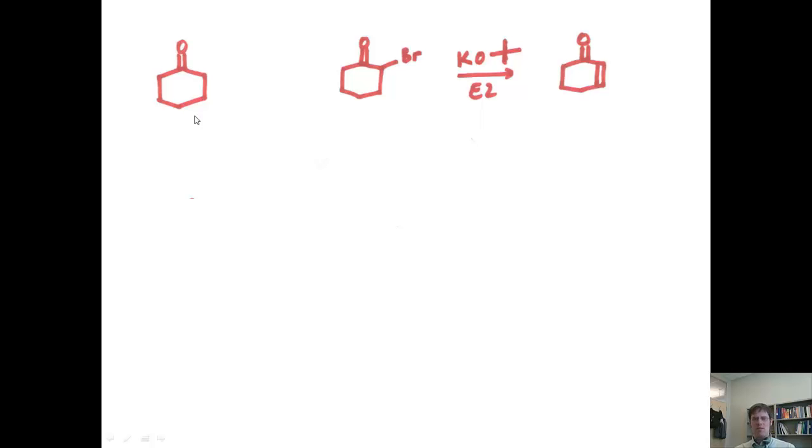Is there any way I could convert this cyclohexanone into this product that has the bromine on the alpha position? Well, if I remember back to our previous video lecture, the answer is yes. I know that I can put a single bromine on the alpha position by treating my starting material ketone with acid and bromine. This is a very good use of this acid-catalyzed bromination.